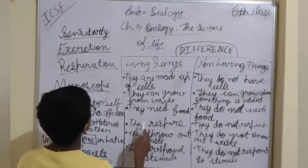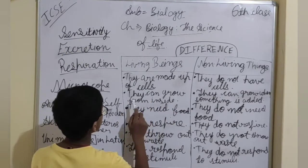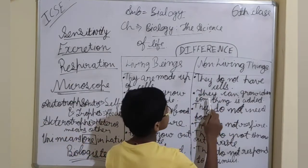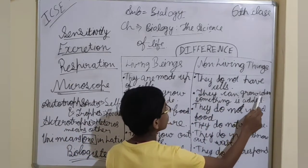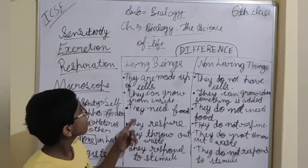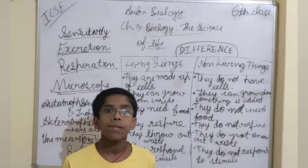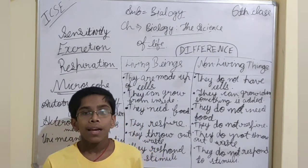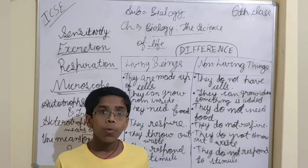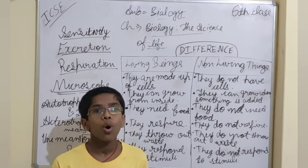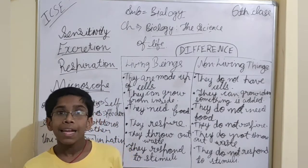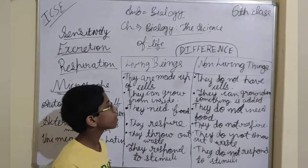Our next topic is: living beings can grow from inside. Living beings can grow from inside when the cells multiply. When two or more cells multiply, they form tissue. When two or more tissues multiply, they form an organ. And when two or more organs combine, they form an organ system. This forms the body of an organism.